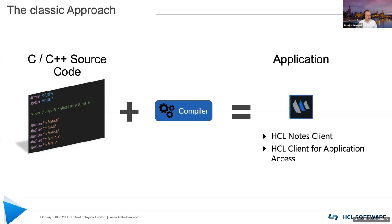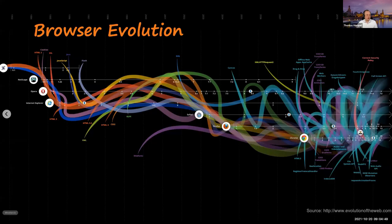The classic approach to application development involved writing source code in a preferred language — the Notes client was written in C or C++, compiled, and packaged into a client. But there has been quite some evolution in web browser technology. This chart shows the different technologies introduced in web browsers over the past two decades. If you're old enough you'll remember Netscape Navigator, and looking at this colorful chart you can see it gets very busy toward the end, with many new technologies introduced.